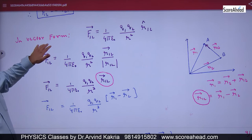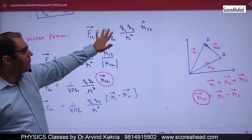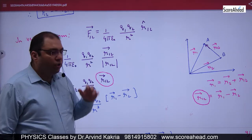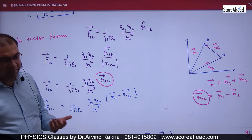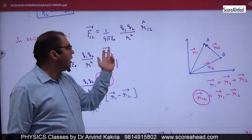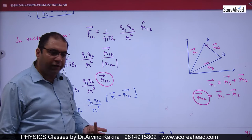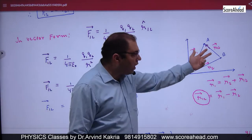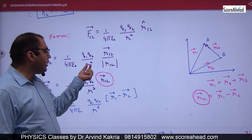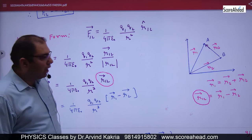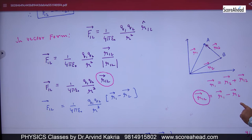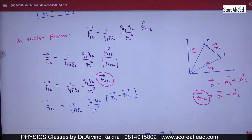Now we write another vector form. F12 vector is the magnitude multiplied by R12 cap. The unit vector is a vector divided by its magnitude. So R12 cap equals R12 vector divided by its magnitude. R12 vector is the displacement vector from Q2 to Q1.